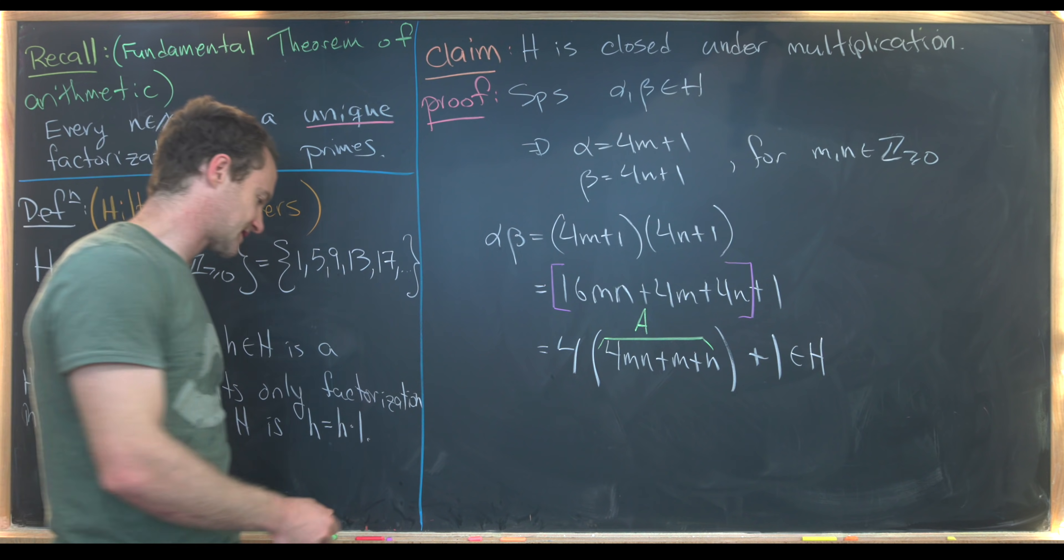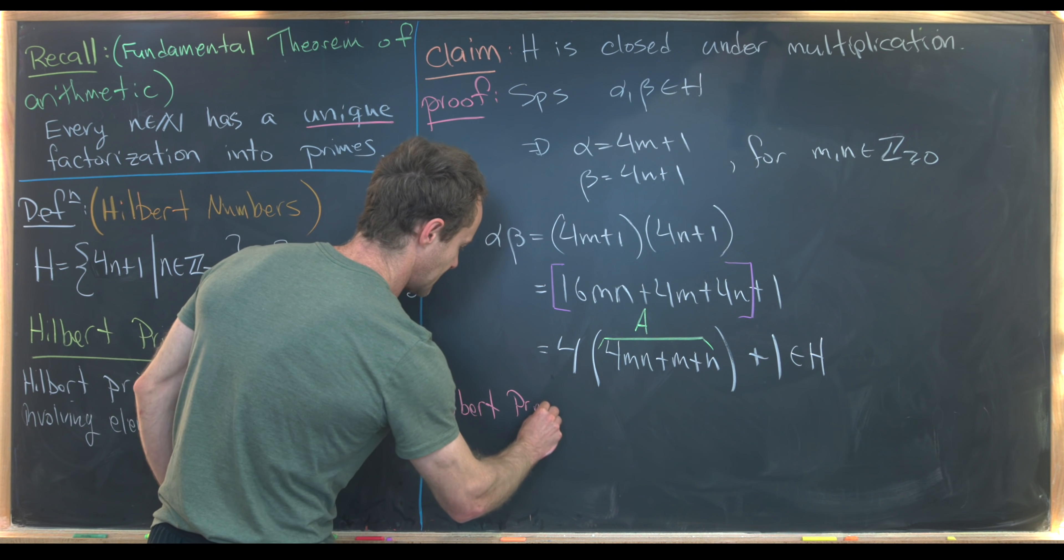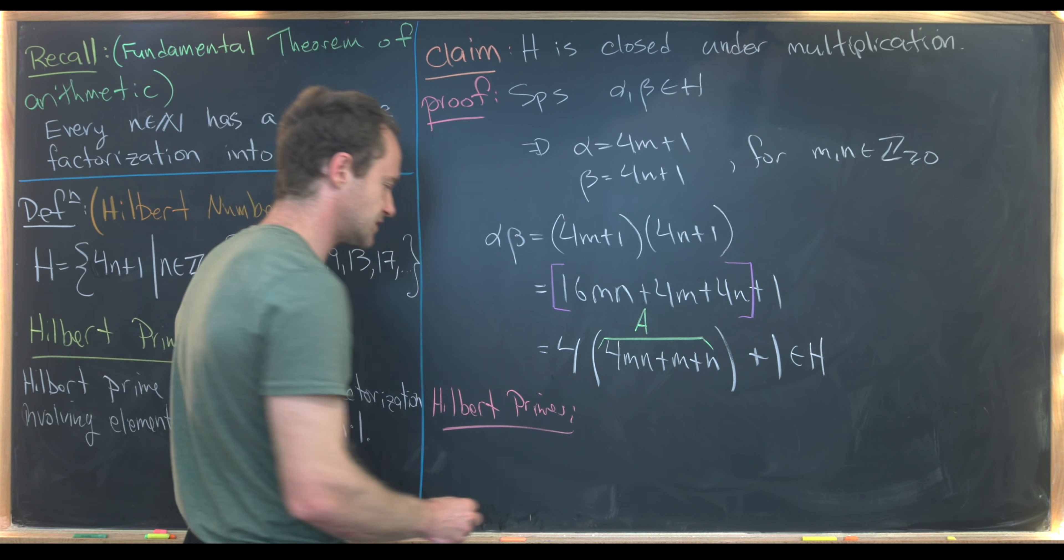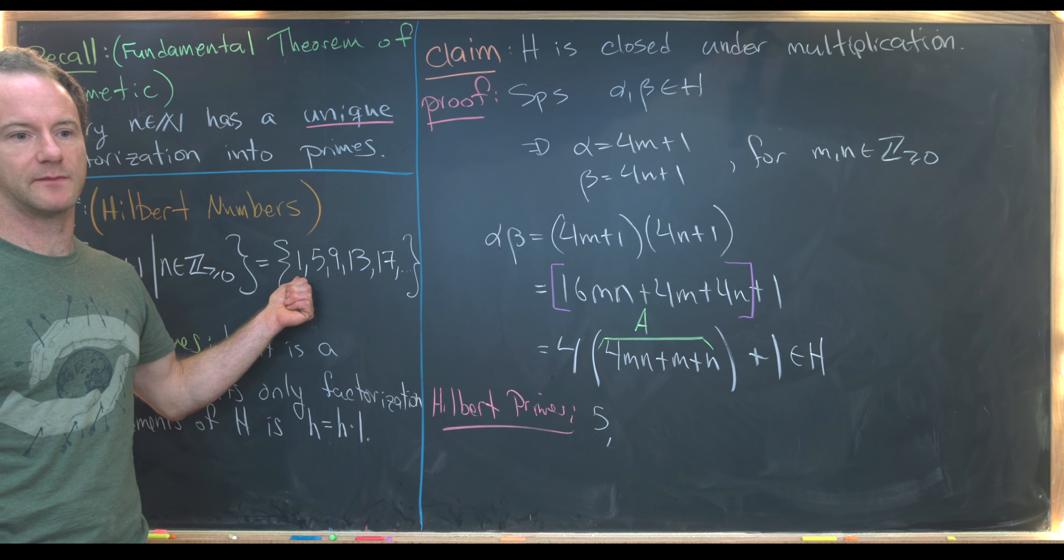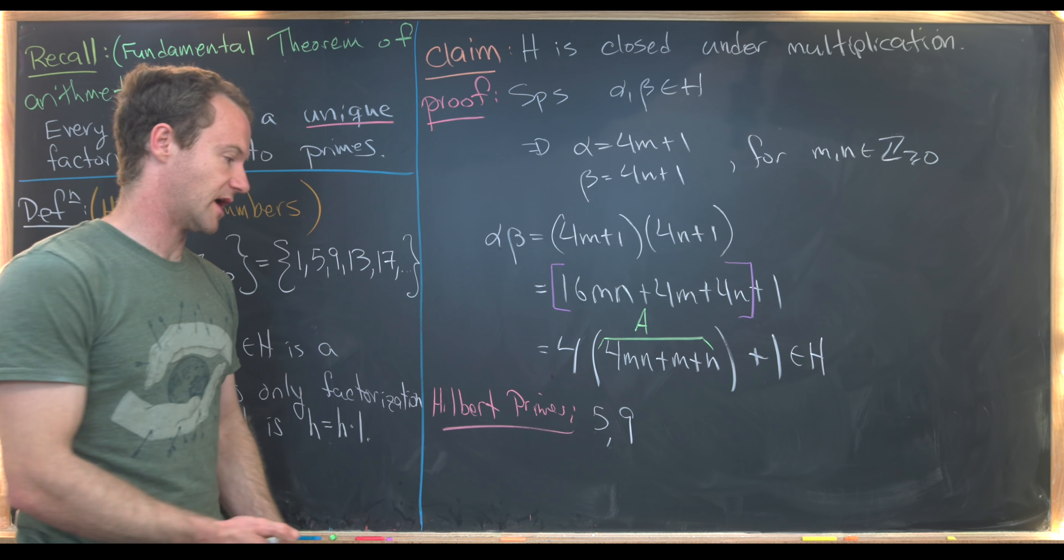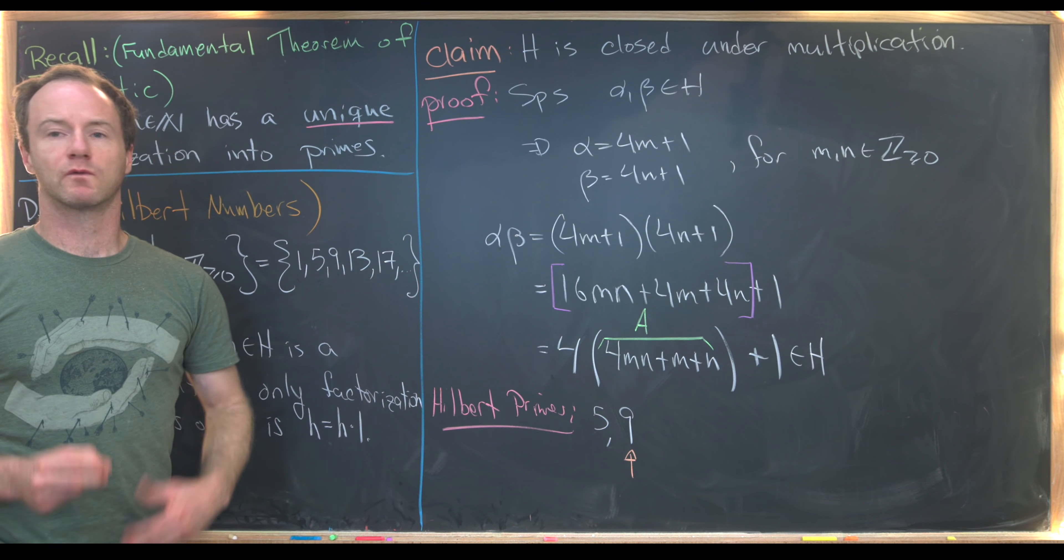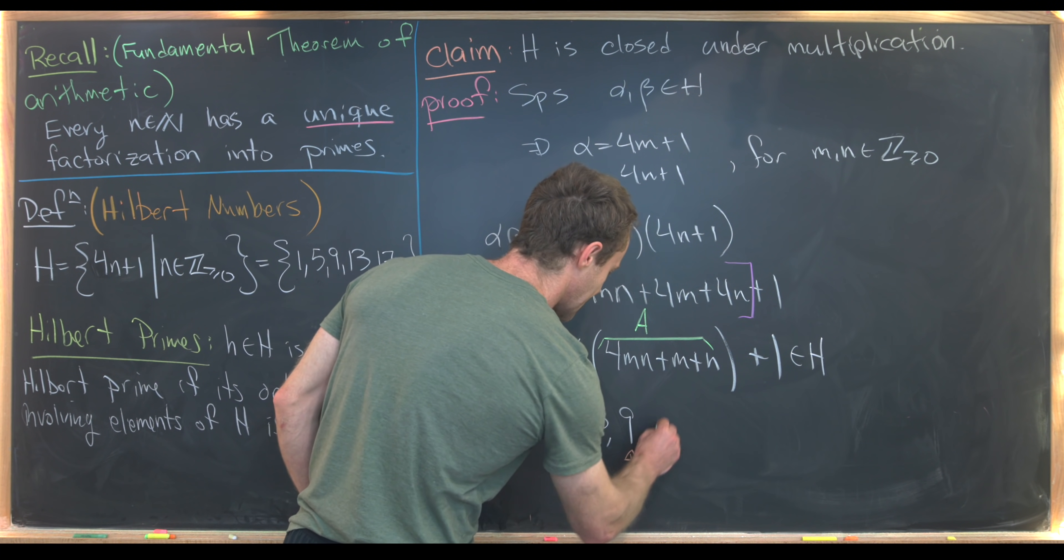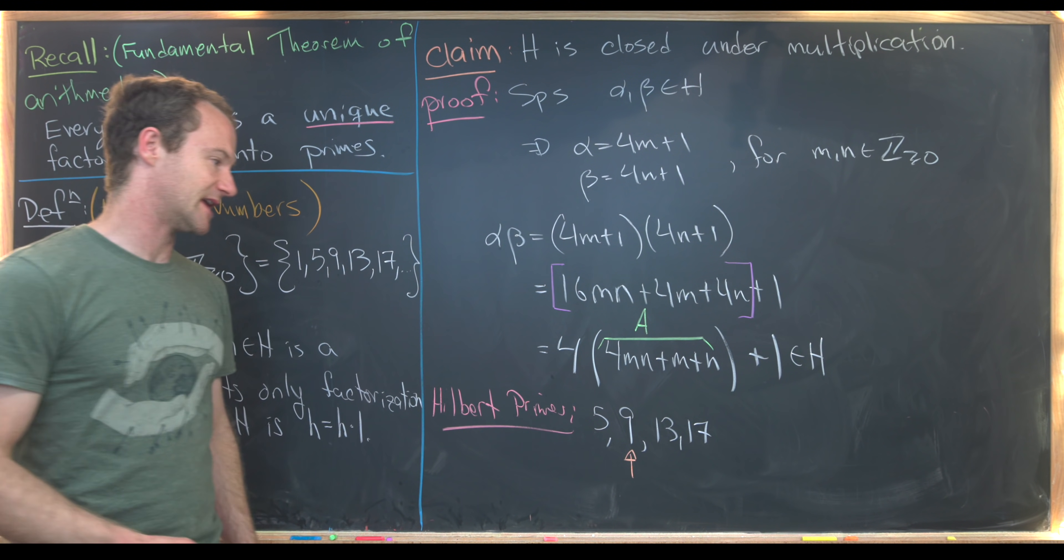So now that we've proven this claim, let's look at some more Hilbert primes. Notice that they come in a couple of different flavors. 5 is the first Hilbert prime. Well, 1 is not a prime because it's a unit. Then 9 is the second Hilbert prime, but this is not a regular prime, so I'll maybe put a little arrow under it to remind ourselves that this is not a regular prime. It's 3 times 3. And then next, we have 13 and 17. Those are both Hilbert primes and regular primes.